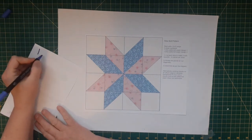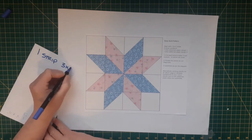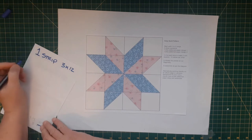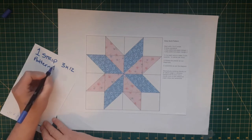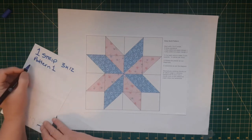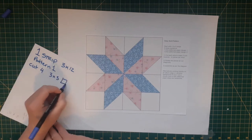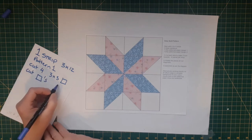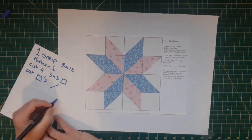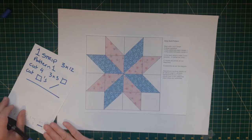I'm going one strip, three by 12, right, in pattern one. And then I'm going to take that strip, I'm going to cut four three by three squares. And then I'm going to cut my squares diagonally. And I'm going to do the same thing again for pattern two. And then I'm just going to mimic the pattern you see here on the page. Easy enough.